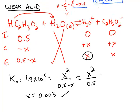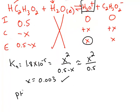And check back on the ICE chart. X stands for the concentration of hydronium. So that x value will let us calculate the pH.